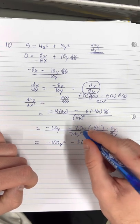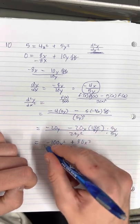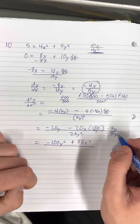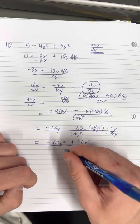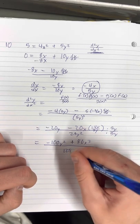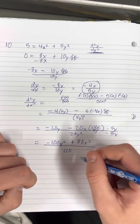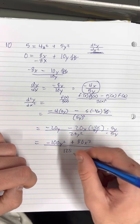And that's actually going to be plus because it's a negative times a negative. On the bottom, it's going to give us 5 times 25, which is 125, and that's going to be y to the third.